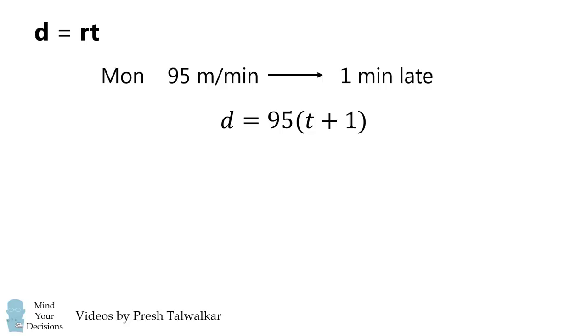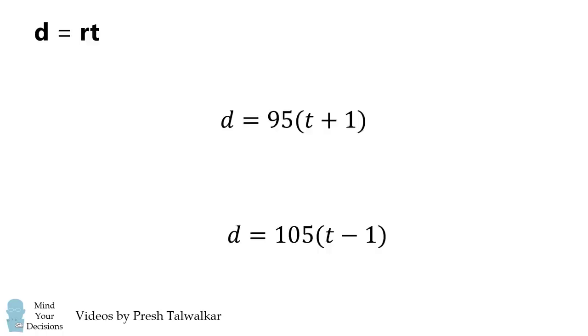We have a similar equation for Tuesday. Here, the rate is equal to 105, and the time is equal to t minus 1 because he's one minute early. Now, we focus on the system of two equations.